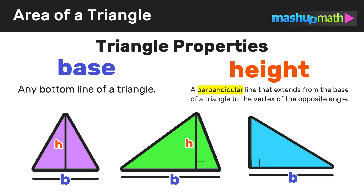A quick note on finding the height of a right triangle: since a right triangle already has a pair of perpendicular lines, the height will be the side directly adjacent to the base — that is, the side adjacent to the base that is not the hypotenuse. So as long as you can identify the base and height of a triangle, you can find the area.